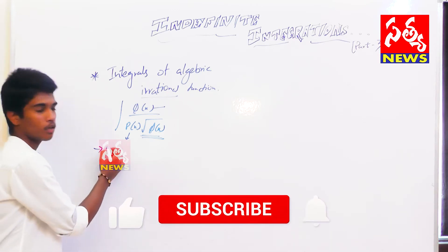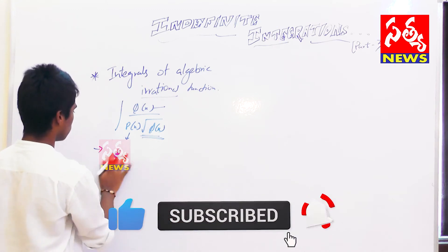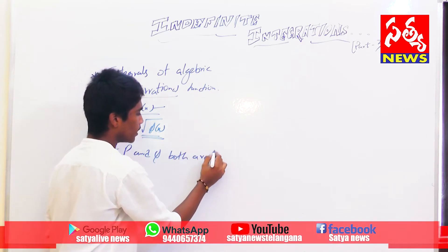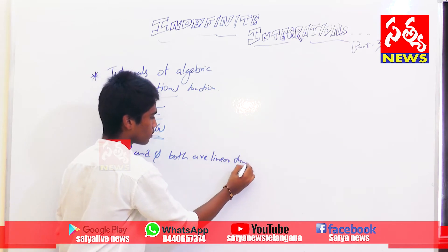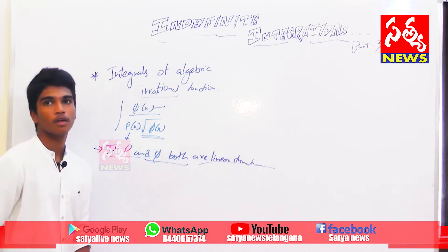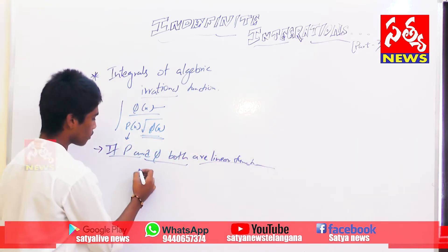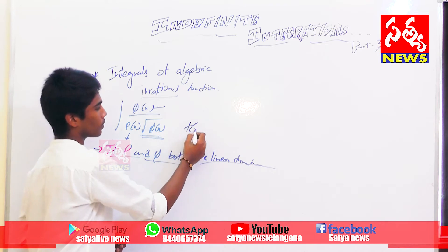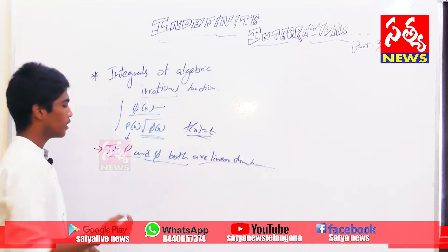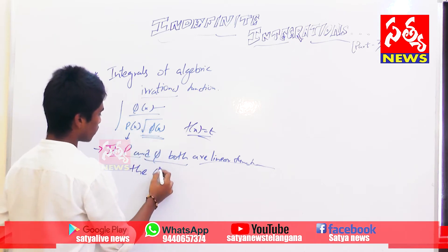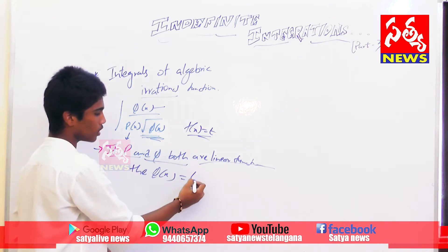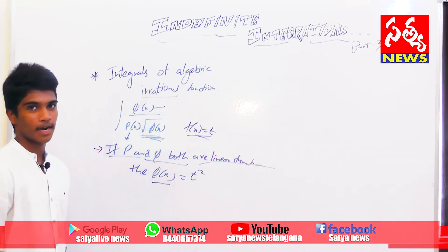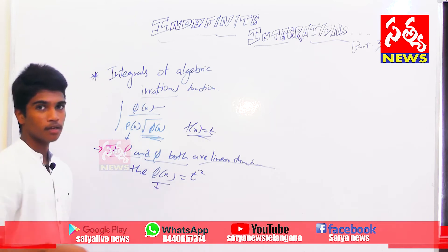The first condition is if p and q are both linear functions. Then, just as in every integration we take f(x) as t, here we take q(x) — the total function itself — as t or t squared. By differentiating, we can get the answer directly.